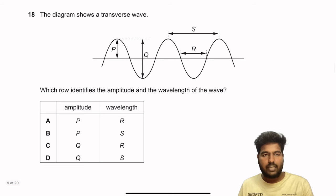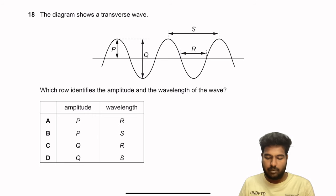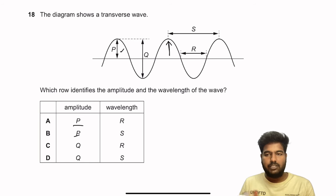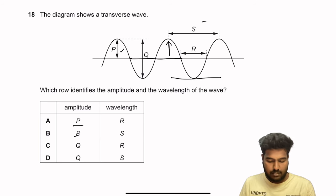Question 18: The diagram shows a transverse wave. The amplitude is the maximum displacement from equilibrium — that is P. The wavelength is the distance between two successive peaks — that is Q. So B is the right answer.